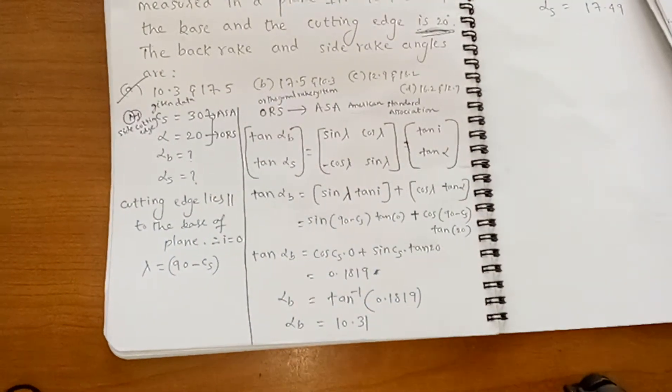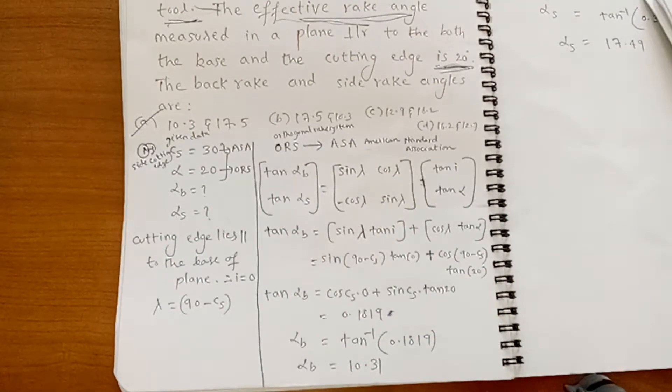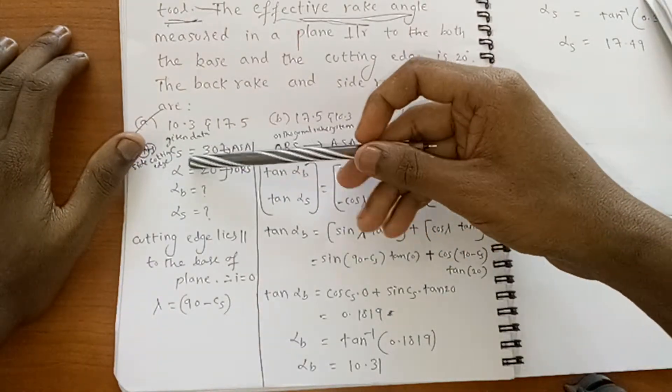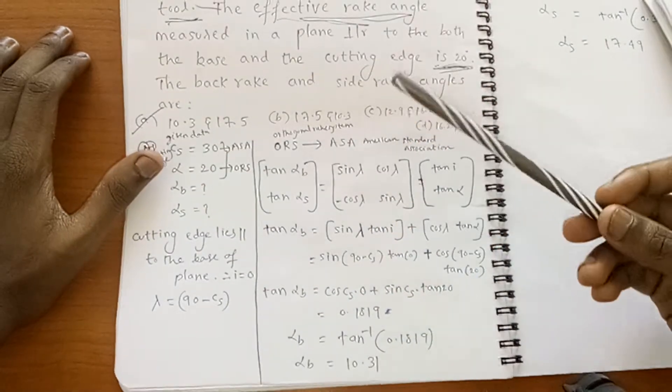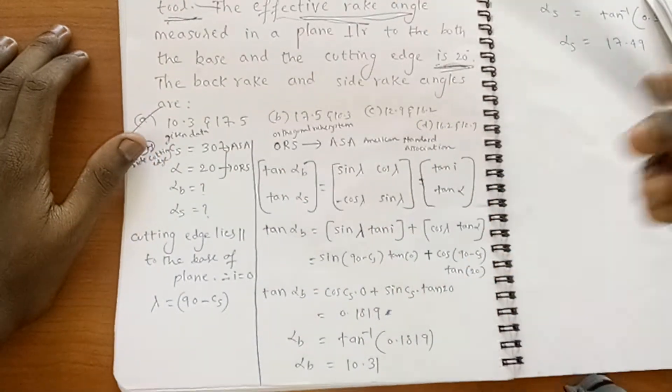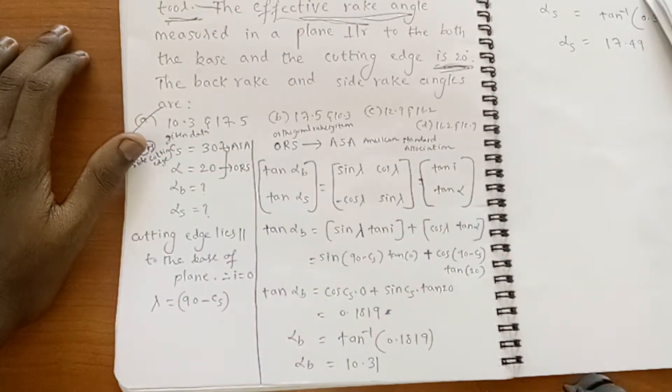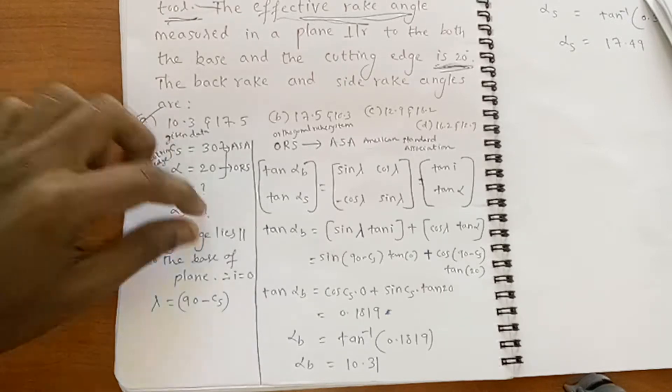Now let's solve the problem. In the question, CS side cutting edge angle, alpha in ORS system effective rake angle are given. You have to find out alpha_B, alpha_S, back rake angle and side rake angle in ASA system.